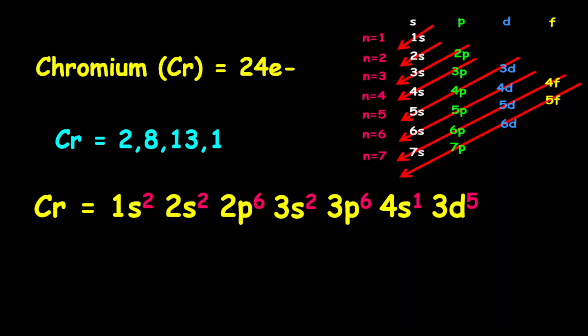Also, the 4s, since one electron is being shifted over, one of the two electrons, then the 4s is also more stable.